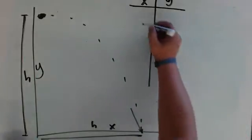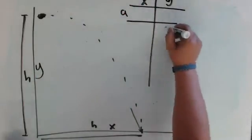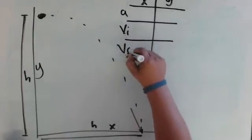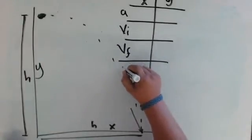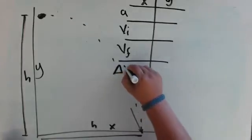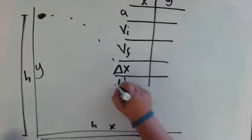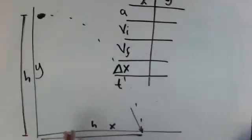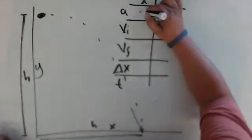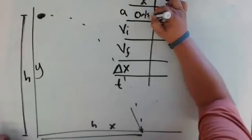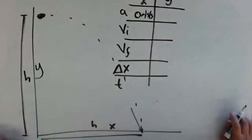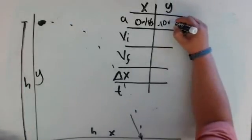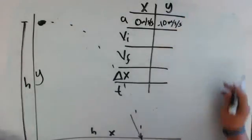What we're looking for is acceleration, initial velocity, final velocity, and then change of position and time. In the x direction there is no acceleration — that term is zero. In the y direction, we have the acceleration due to gravity: 9.8, but for this problem I'm going to simplify it to 10.